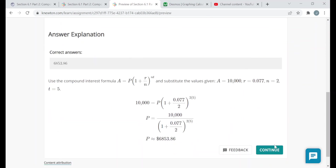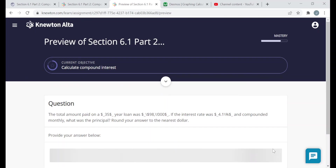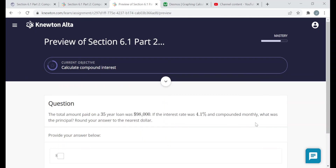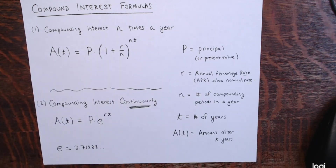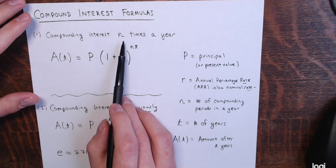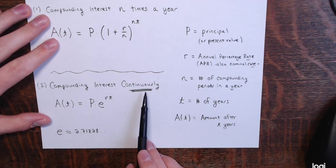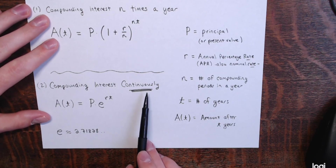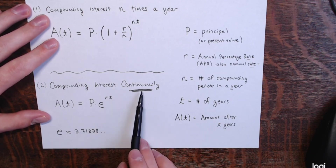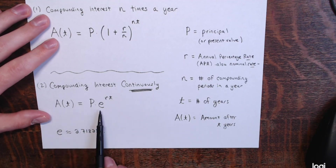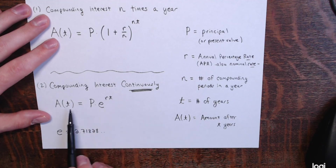I want to warn you: so far these problems have all involved compounding a finite number of times per year. You may come across problems where they say compounded continuously. If you see the word 'continuously,' use the formula P times e to the rt power — no n anywhere. Just be aware of that.